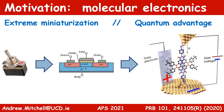A current flowing from source to drain necessitates electrons quantum mechanically tunneling through the single molecule. Conductance is therefore controlled by the molecular structure, geometry, hybridization, chemistry, and so on. While incredible progress has been made in scaling down conventional CMOS-based transistors to the nanoscale, single molecule junctions are certainly the physical limit of miniaturization.